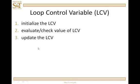In any loop, the loop control variable must go through three steps. Number one, the loop control variable has to be initialized. Two, it has to be checked or evaluated. And three, it has to be updated. If any one of these three is not included in your loop, then you're going to end up with a broken piece of code.